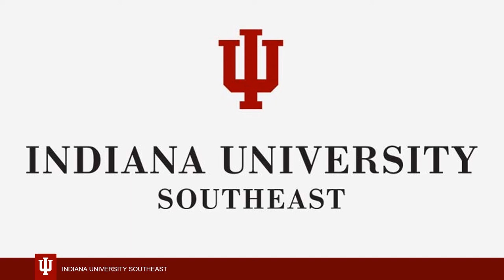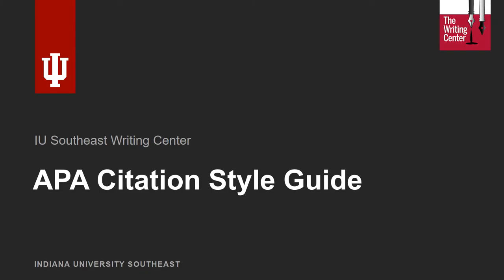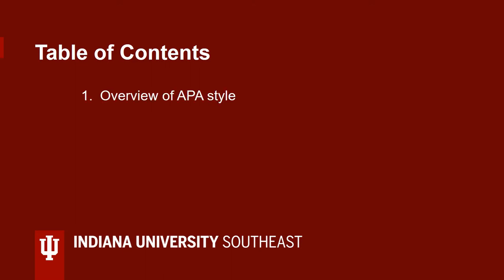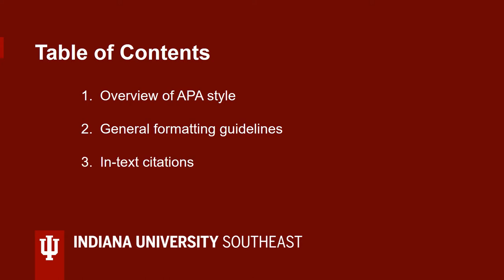Hi, my name is Taryn. Welcome to the IU Southeast Writing Center's video walkthrough of the APA 7 Style Guide. In this video, we will discuss some general information about APA, including which disciplines use it and why, formatting guidelines for the student edition of APA 7, rules for creating in-text citations, which are also known as parenthetical citations, and how to correctly create references for sources, including examples of some of the most common types, like books, scholarly journals, and articles.